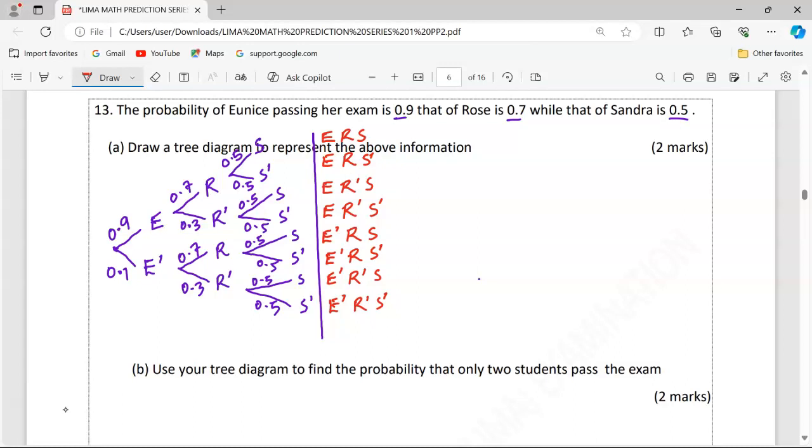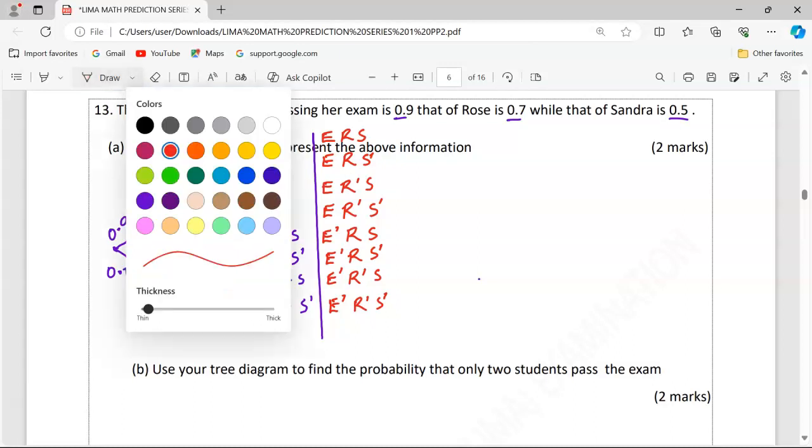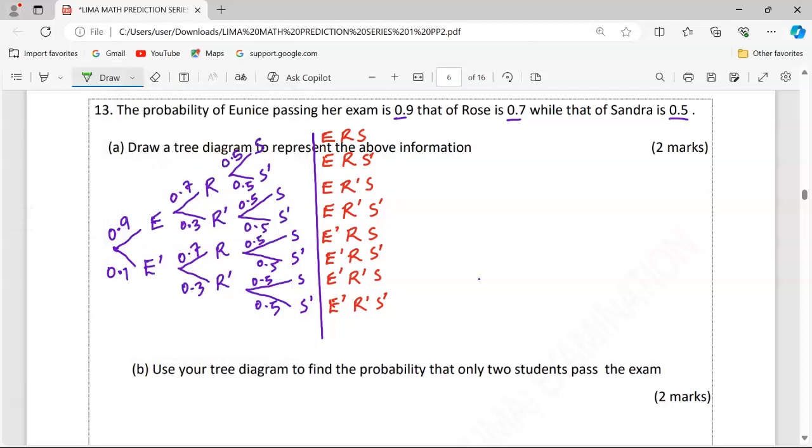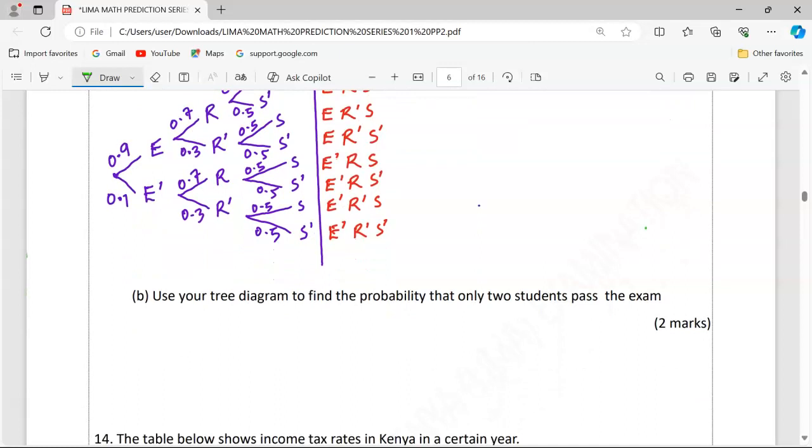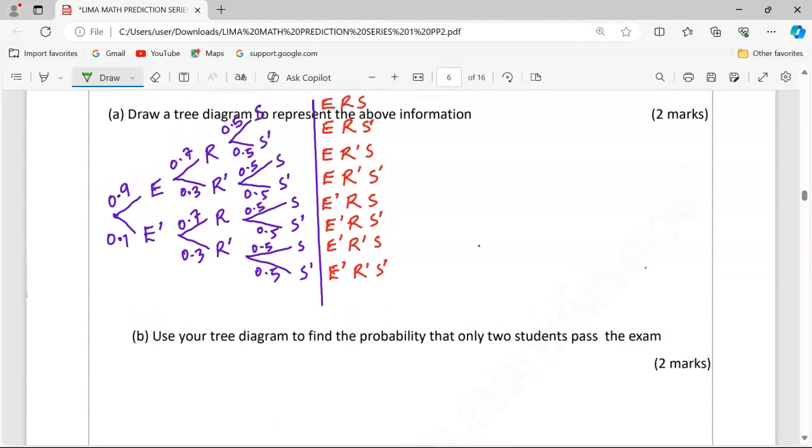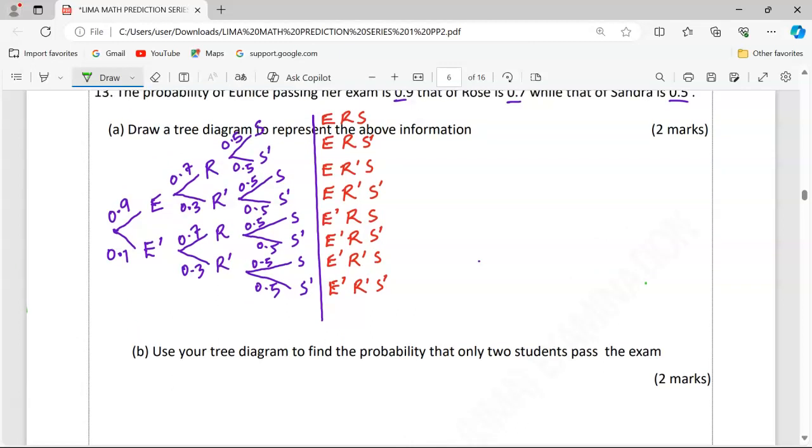We can go now to the questions whereby we are told to use the tree diagram to find the probability that only two students pass the exam.